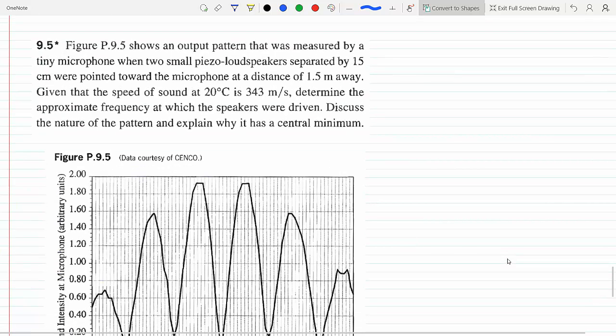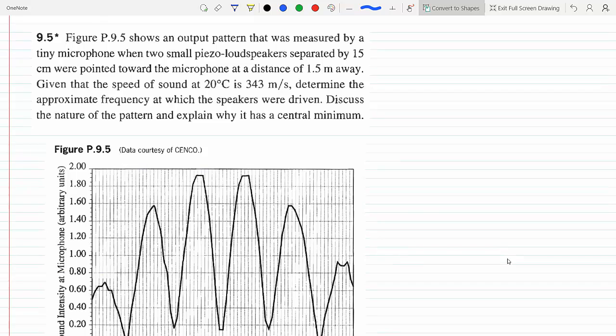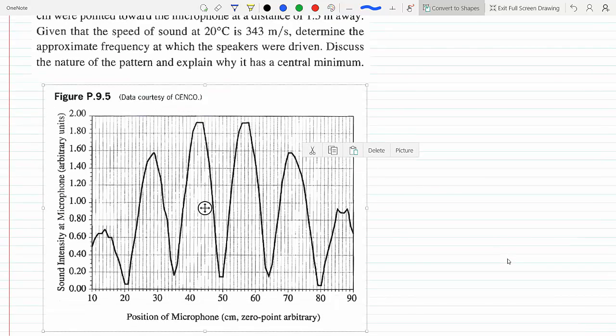Okay, so here we have a figure that shows the output pattern measured by a tiny microphone when two loudspeakers separated by 15 cm are pointed toward a microphone 1.5 meters away. Data is collected, speed of sound is 343 m/s. We have a graph showing the sound intensity at the microphone as a function of position, and we need to figure out the frequency at which the speakers were driven.